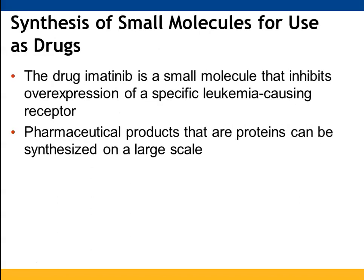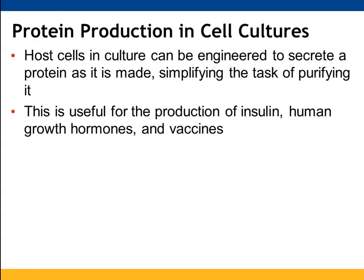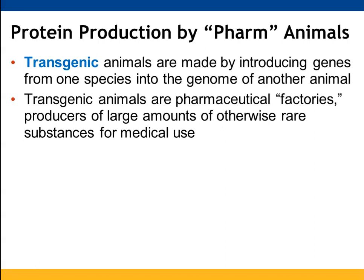Biotechnology has helped us produce pharmaceuticals — including proteins produced in cells or in animals. Examples include a medication that prevents a leukemia receptor from being overexpressed. Other examples of proteins produced this way include insulin, human growth hormones, and vaccines. We can also engineer transgenic animals that have genes from one species incorporated into their DNA, which can serve as a source for producing needed proteins in large quantities.